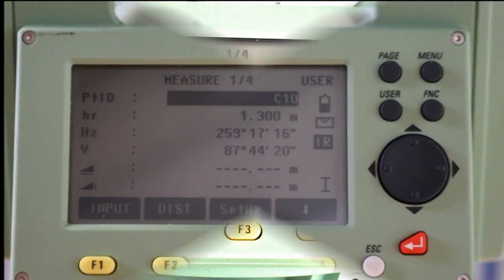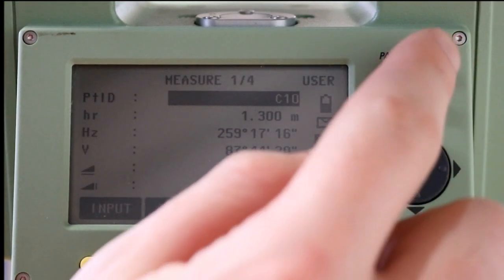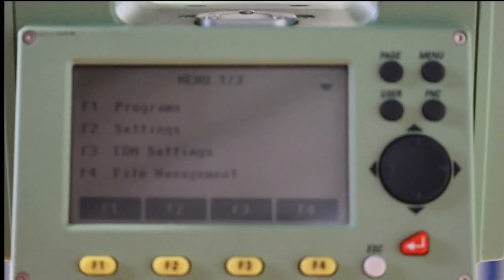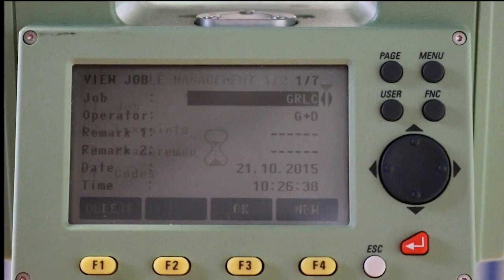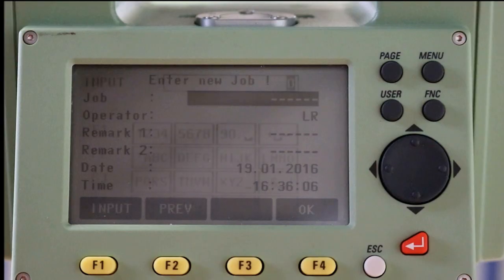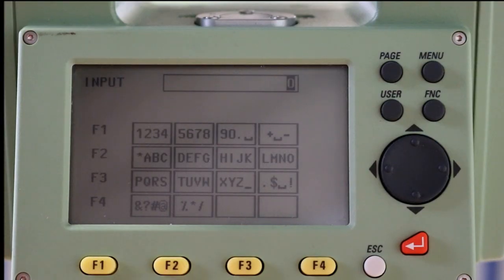First thing you have to do after leveling the total station is to create a job file. This file will be where all your data unique to your job will be saved. To do this, press the menu button, F4 for file management, and F1 to enter the jobs folder. Firstly, we must give the job a name. For the sake of this demonstration, I will call it Job A.